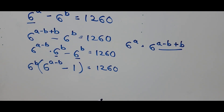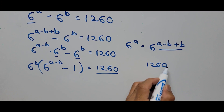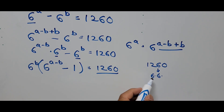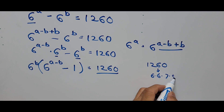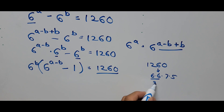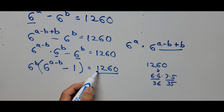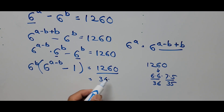Our next focus is on the constant on the right side of the equation: 1260. The factors of 1260 are 6 times 6 times 7 times 5. That is 36 times 35. So we substitute that in: 1260 equals 36 times 35.